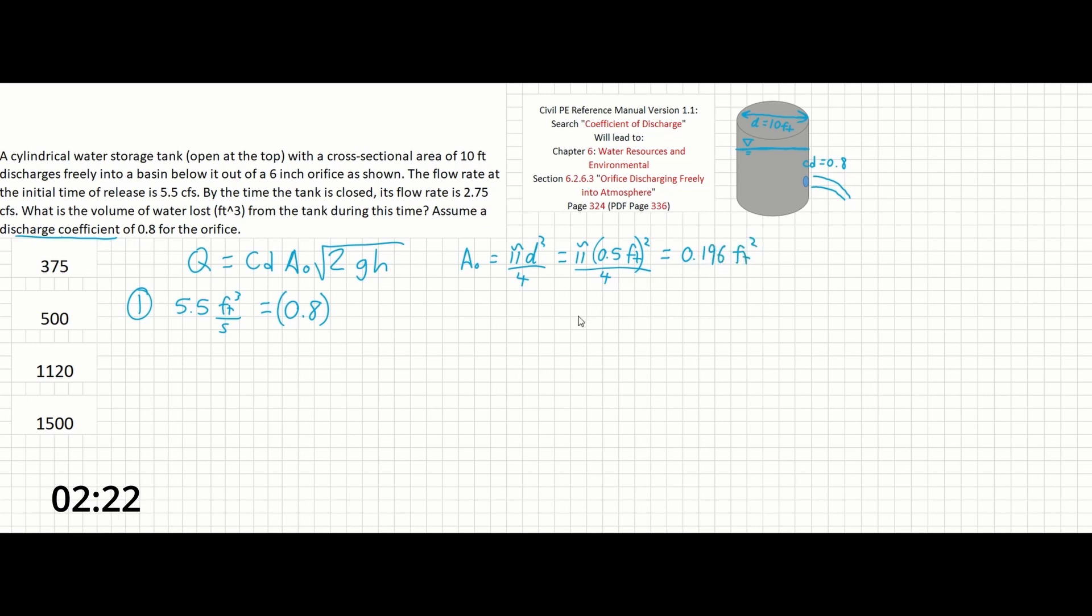...equals pi d squared over 4 equals pi times 0.5 feet squared over 4 equals 0.196 feet squared. And while we're at it, we can just solve for the area of the tank. That's going to be the same thing: pi times 10 feet squared over 4 equals 78.5 feet squared.